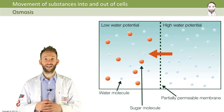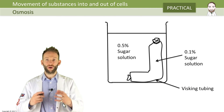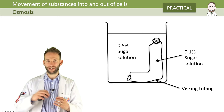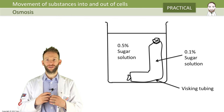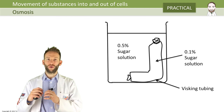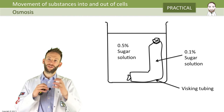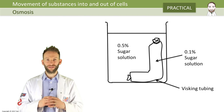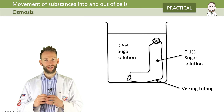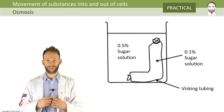Here's a little example that you might have in a practical. It is a sort of model cell — like a membrane — where visking tubing is permeable to small molecules. We've got a solution inside, a sugary water solution, and a sugary water solution outside. But inside is 0.1% sugar and outside is 0.5% sugar solution.